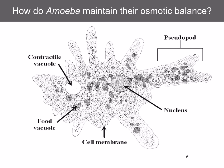In the same way, an amoeba, which is a unicellular freshwater protoctist, will have contractile vacuoles. Water enters the cell, goes into the vacuole, the vacuole moves to the edge of the cell, and expels the water back into the environment by exocytosis.